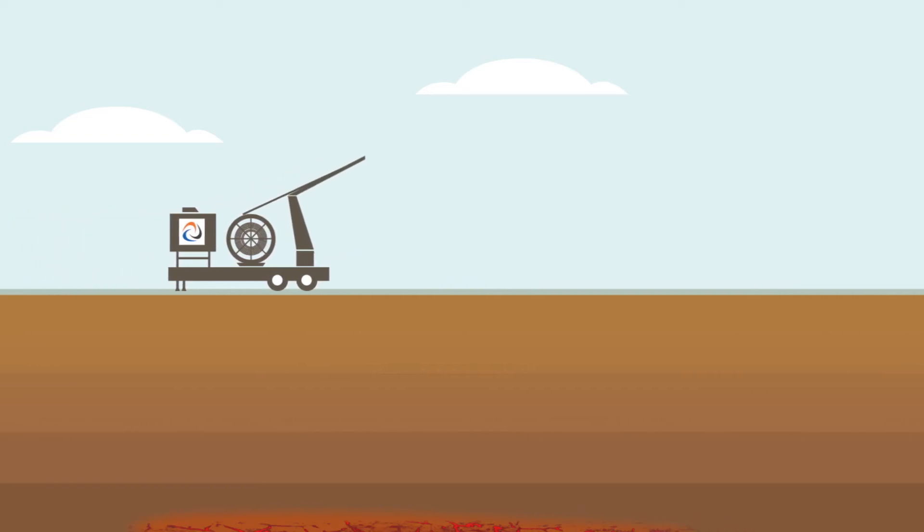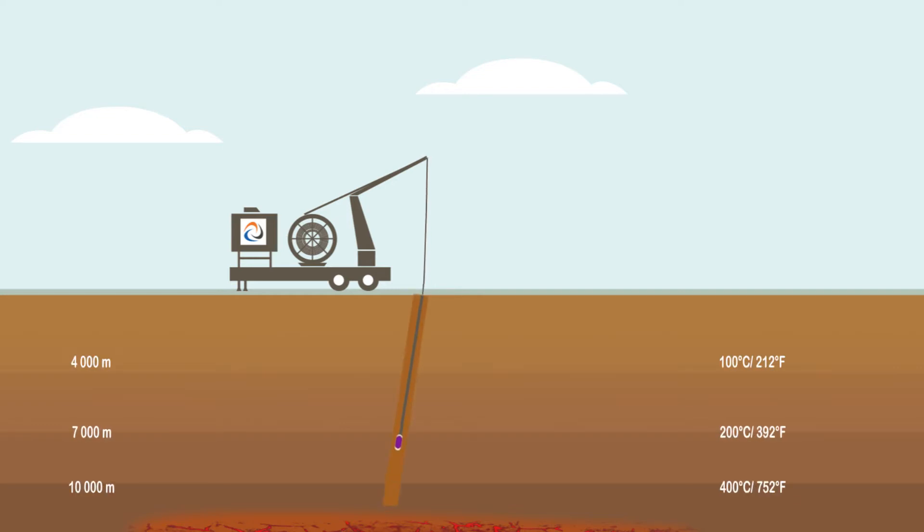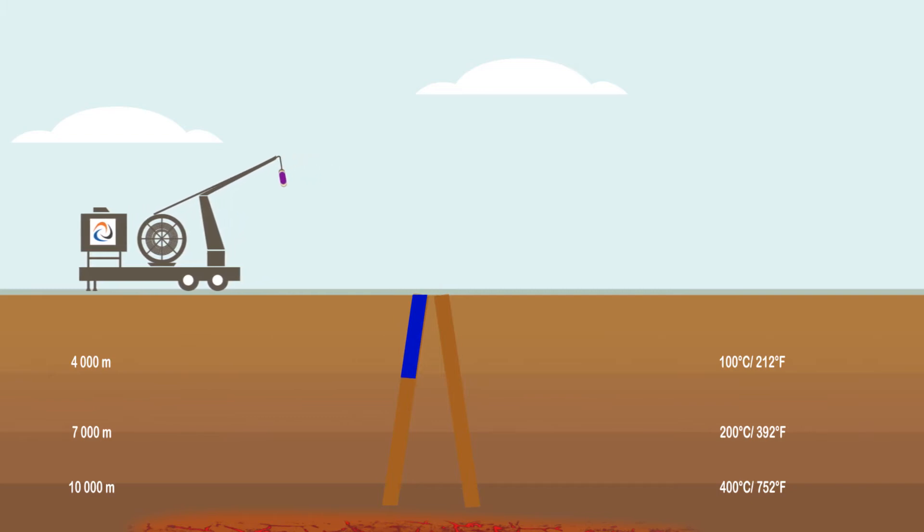With its revolutionary PlasmaBit technology, GA Drilling will provide a fast, safe and economical way to drill down to depths of 10 km, where temperatures reach over 300 degrees centigrade.